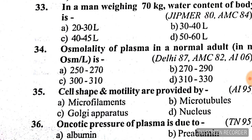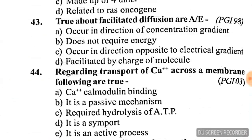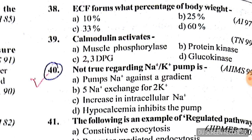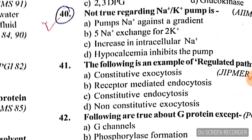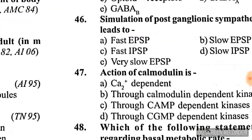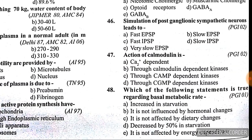Question 40: what is not true regarding the sodium-potassium pump? The pump transports sodium against a gradient — 3 sodium exchanged for 2 potassium. Increase in intracellular sodium activates it. Hypocalcemia inhibits the pump. Answer for question 40: C — increase in intracellular sodium is the exception.